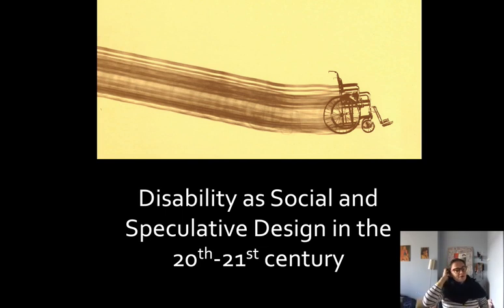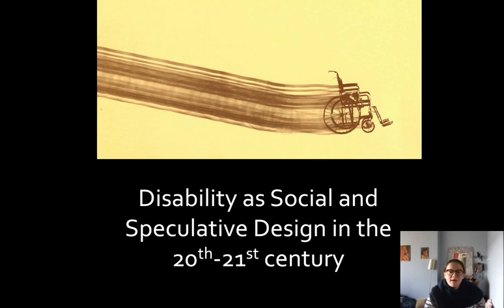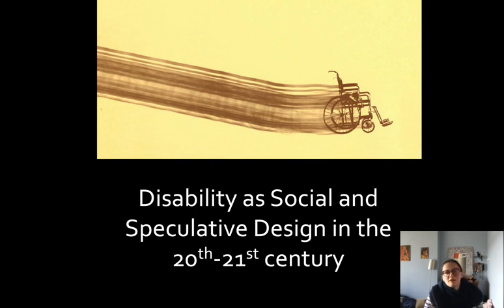The lecture asks what kind of design is design related to disability. We often think of accessibility in terms of wheelchair ramps, bathrooms, and more recently digital forms of access like captioning and alt text. But I start with this image of a wheelchair in a stop-motion photograph, swooshing across the camera span, to challenge thinking around disability in relationship to design.